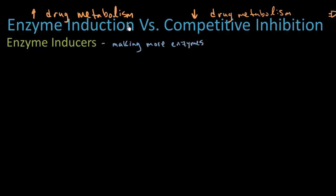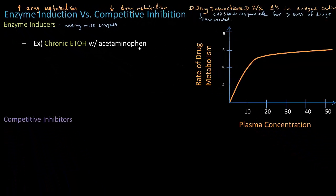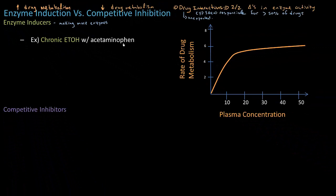This is happening at the genetic level. A signal goes to the nucleus and tells the body to make more enzymes. The first example we're going to do is with chronic alcohol use and acetaminophen, starting with something of a clinical example.